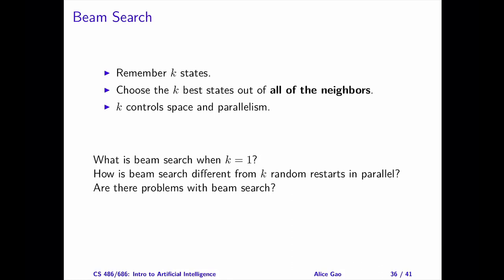Let's take a look at a few questions that can help you think more about the properties of beam search. What does beam search look like when k equals 1? How is beam search different from running greedy descent with k random restarts in parallel? Can you think of any problems with beam search? Pause the video and think about these questions for a few minutes, then keep watching for the answers.